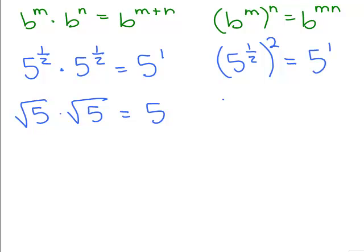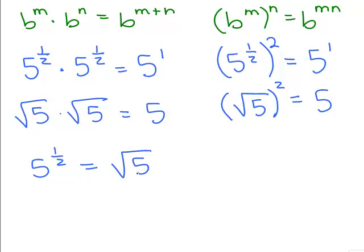So the question is, what number squared equals 5? And again, from our rules with radicals, that would be the square root of 5 squared equals 5. So what do you think 5 to the 1 half equals? Well, it's going to have to be the same thing, the square root of 5, for this to make sense. So we have that 5 to the 1 half equals square root of 5.